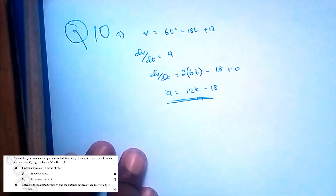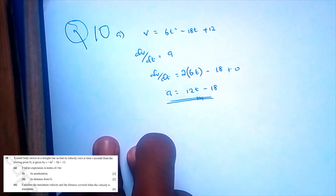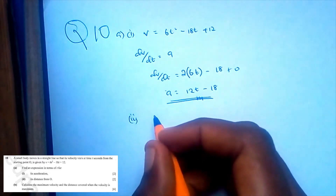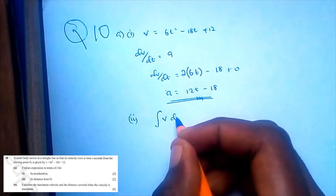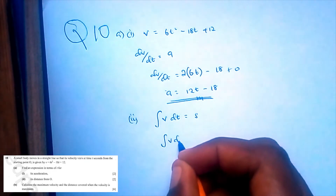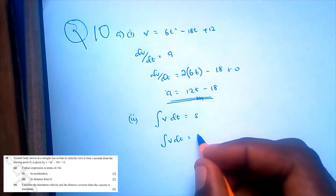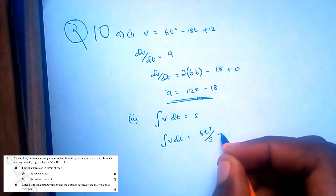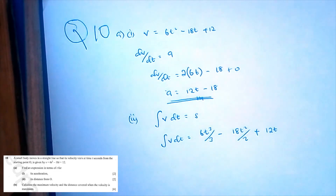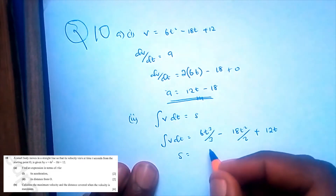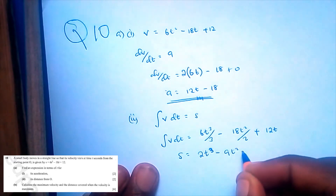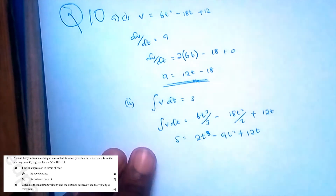For the distance: integrating V with respect to T gives the distance S. Integrating 6T squared minus 18T plus 12 gives 6T cubed over 3 minus 18T squared over 2 plus 12T. So S equals 2T cubed minus 9T squared plus 12T. This is the expression for our distance.